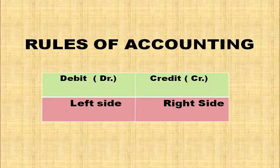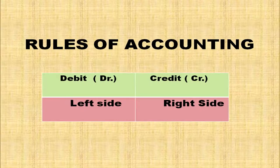Rules of Accounting: In every account, we have a Debit side on the left hand side and a Credit side on the right hand side. In the T-formatted account, the title of the account will be written on the top.